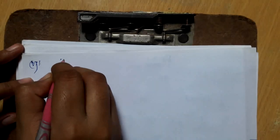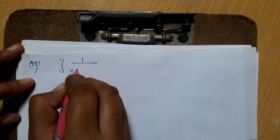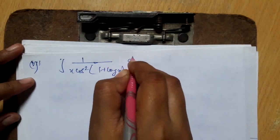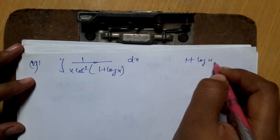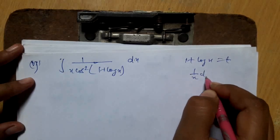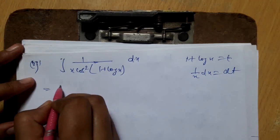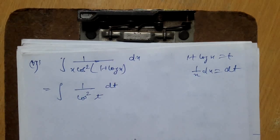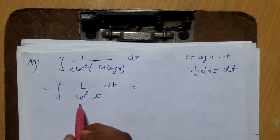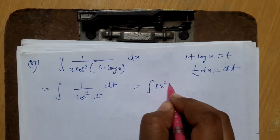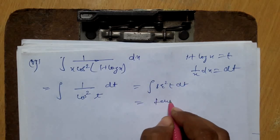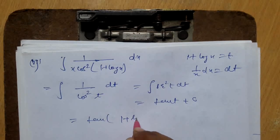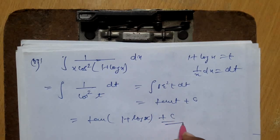Part 5: integration of 1 / (x · cos²(1 + log x)) dx. Put 1 + log x = t, so 1/x dx = dt. The integral becomes ∫1/cos²t dt = ∫sec²t dt = tan t + c. The answer is tan(1 + log x) + c.